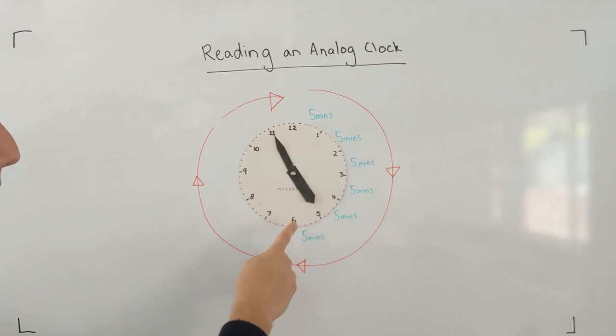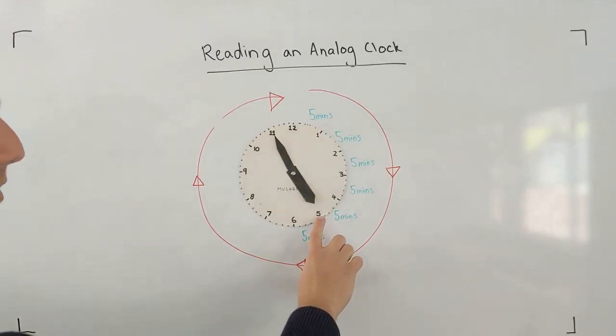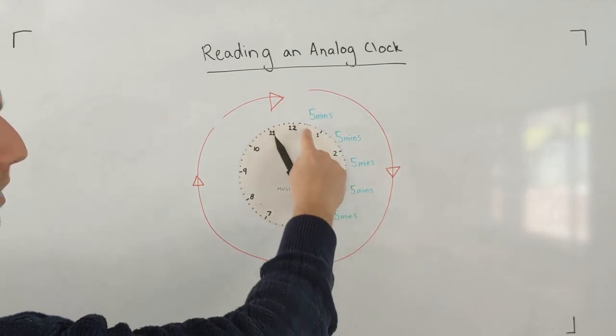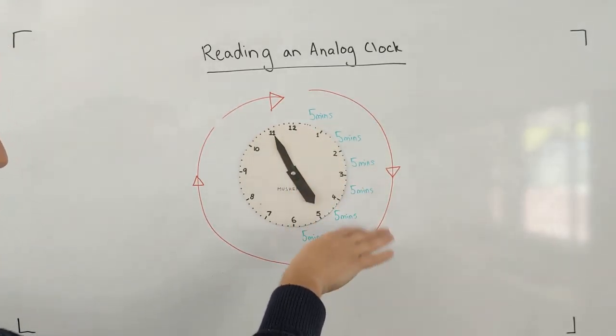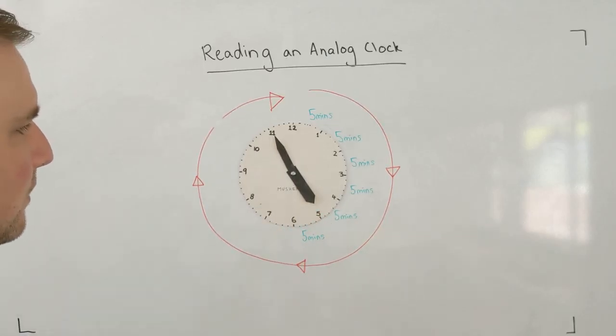But if you look really closely, you'll notice that it's just not quite there. It's almost at the five, but not quite there, which tells us that it must almost be five o'clock or must be close to five o'clock. It's definitely not four o'clock. It's past four o'clock a while ago, must be somewhere around five or close to five.